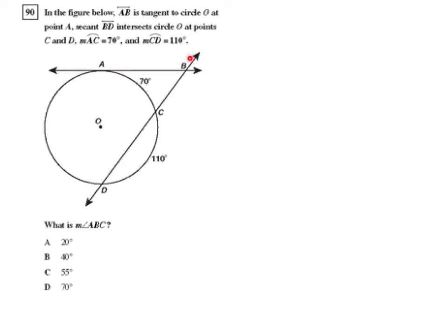Secant BD, which passes through two points of the circle, intersects circle O at points C and D. They tell us that the measure of arc AC is 70 degrees, and the measure of arc CD is 110 degrees.